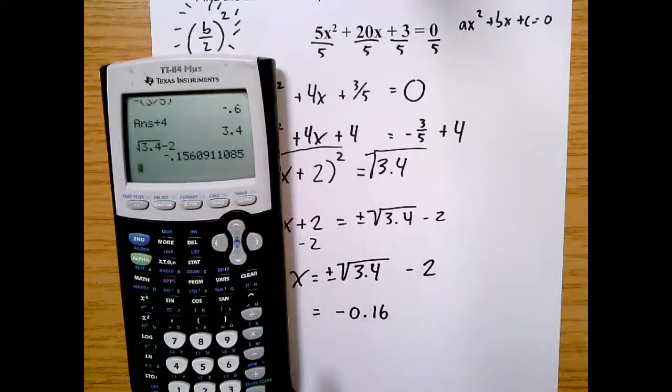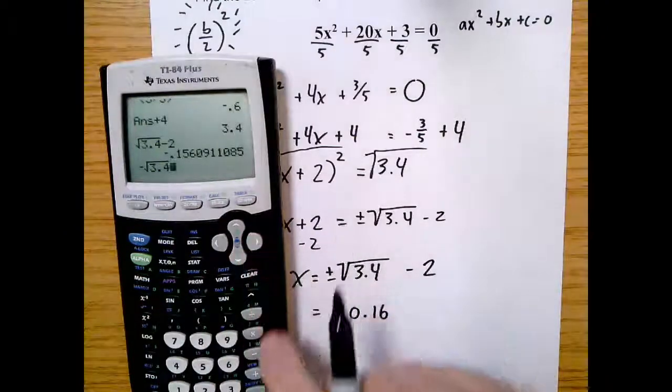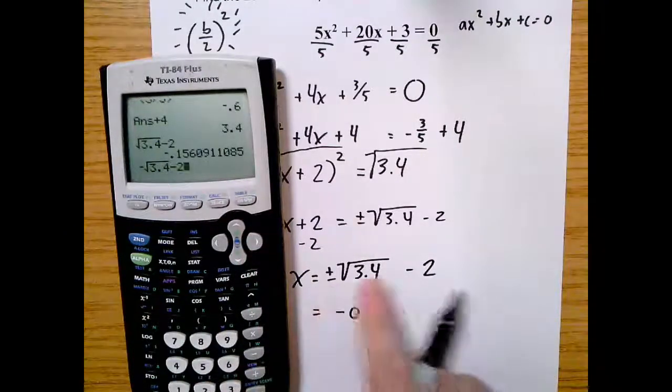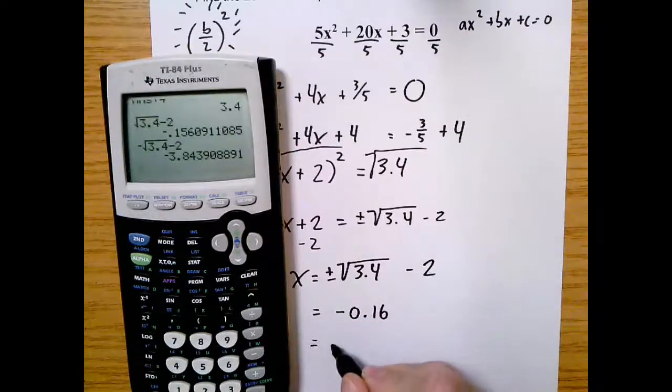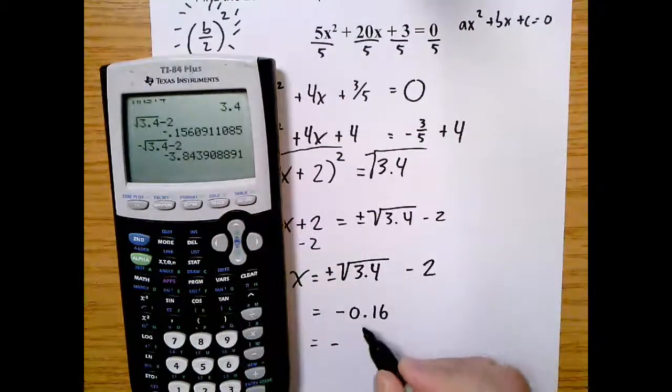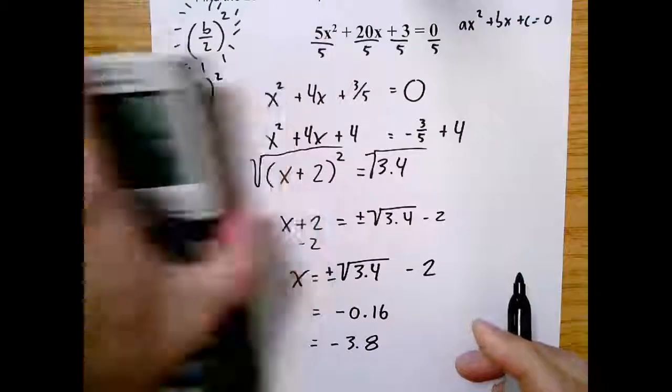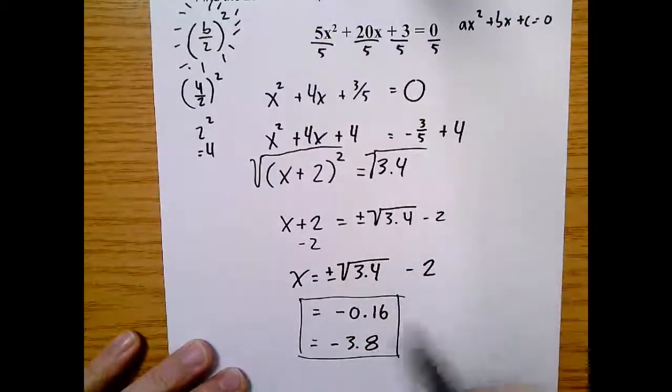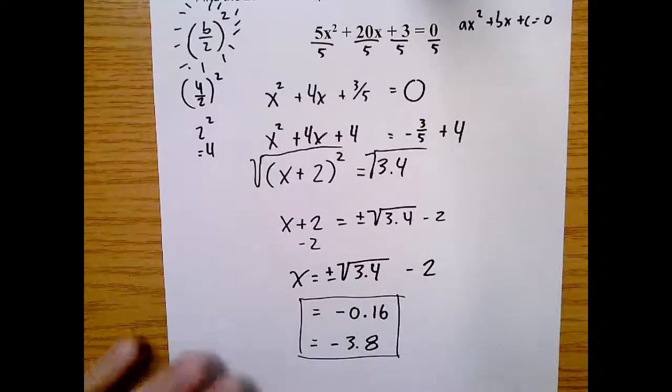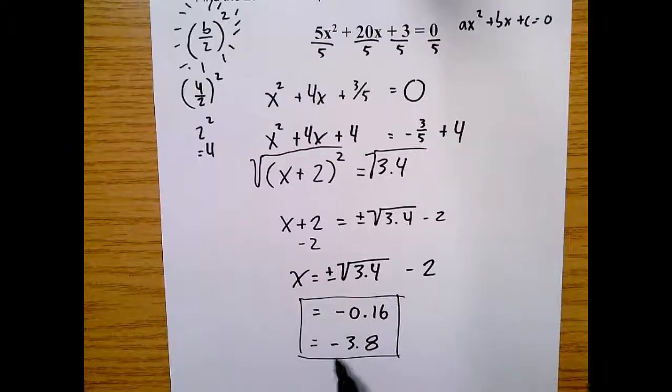But now we have to also do the negative side of this. So I'm going to say negative square root 3.4 minus two, so now I'm taking the negative side of that. And I hit enter and now I'm going to have a negative 3.8. And these are my roots, my x's, my solutions. This is where my parabola crosses the x-axis - crosses twice, once at negative 0.16 and then again at negative 3.8.